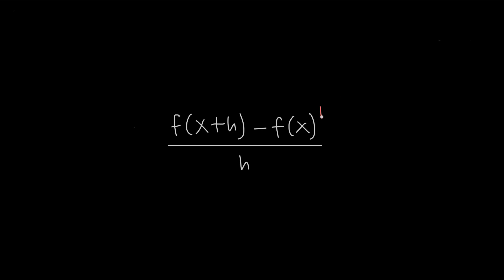This second term, f of x, is just the function itself that we're given. This first term, f of x plus h, is whatever we get when we replace x with x plus h in our original function.